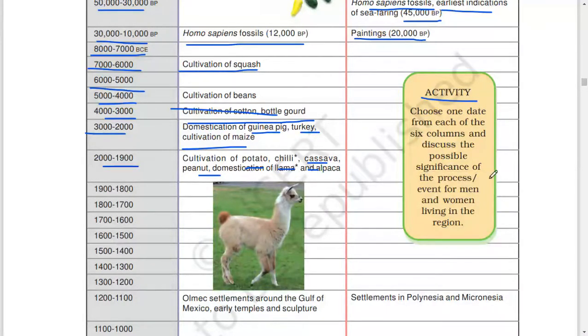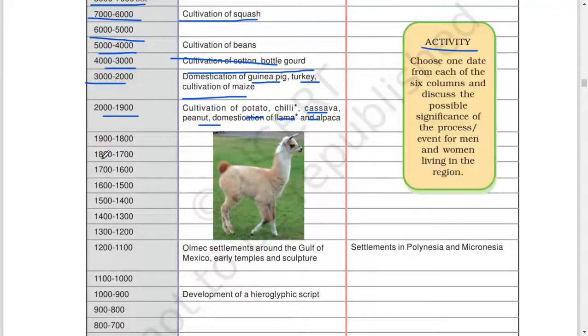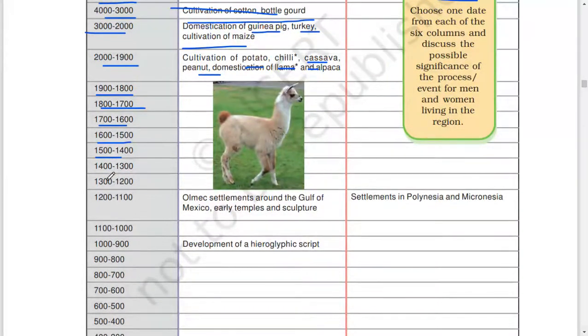Activity: Choose one date from each of the six columns and discuss the possible significance of the process or event for men and women living in the region. 1,900 to 1,800, 1,800 to 1,700, 1,700 to 1,600, 1,600 to 1,500, 1,500 to 1,400, 1,300 to 1,200, 1,200 to 1,100. Olmec settlements around the Gulf of Mexico, early temples and sculpture, settlement in Polynesia and Micronesia.